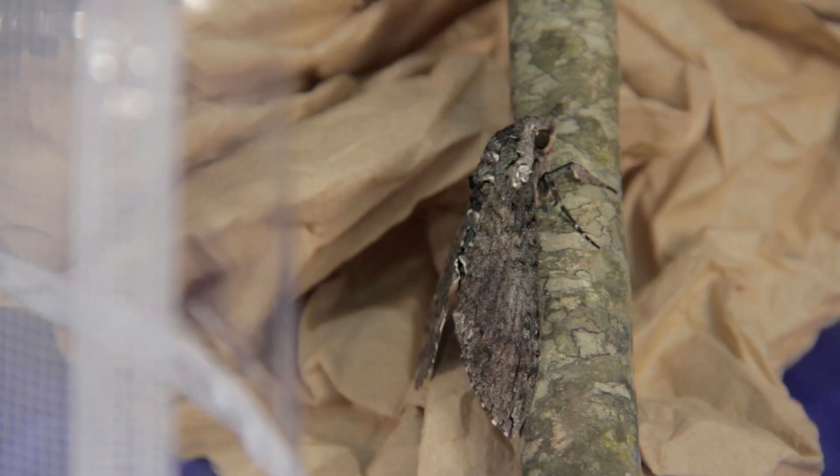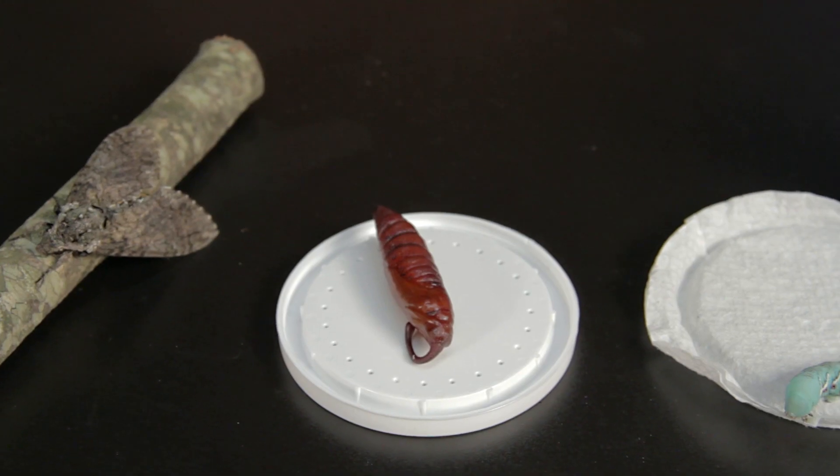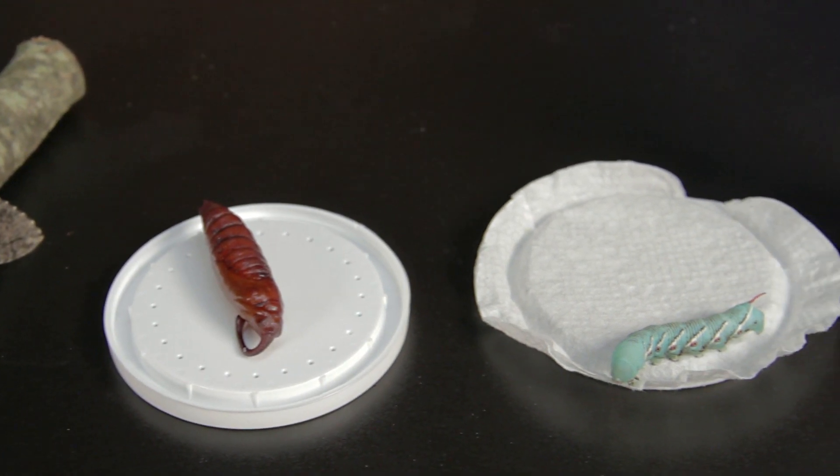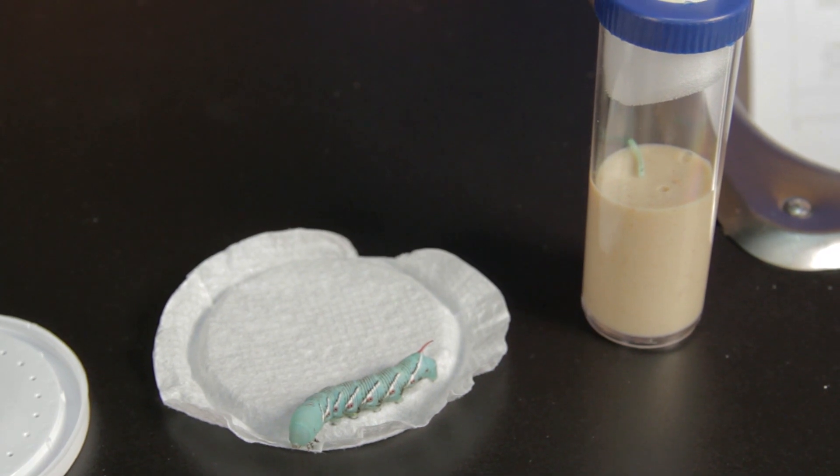Once the adult moth emerges, make sure a sugar water source is available. Please note that hornworms are an agricultural pest, so do not release any stage of the hornworm life cycle into the wild.